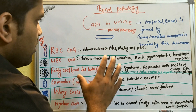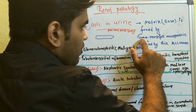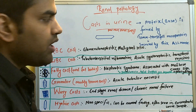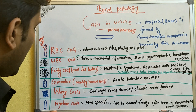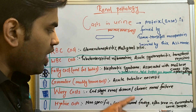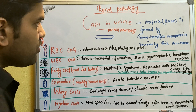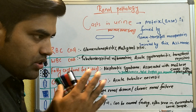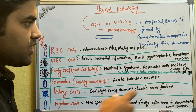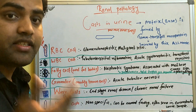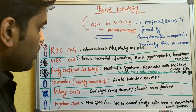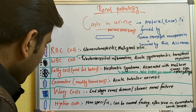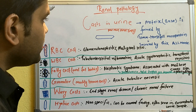In summary, casts are formed by precipitation of Tamm-Horsfall protein, which is the matrix or backbone of every cast. Normally, this tubular structure is known as the hyaline cast, which is non-specific and can be found in normal individuals. Tamm-Horsfall protein is secreted in the thick ascending limb in everyone, so hyaline cast is a normal finding, especially in concentrated urine.